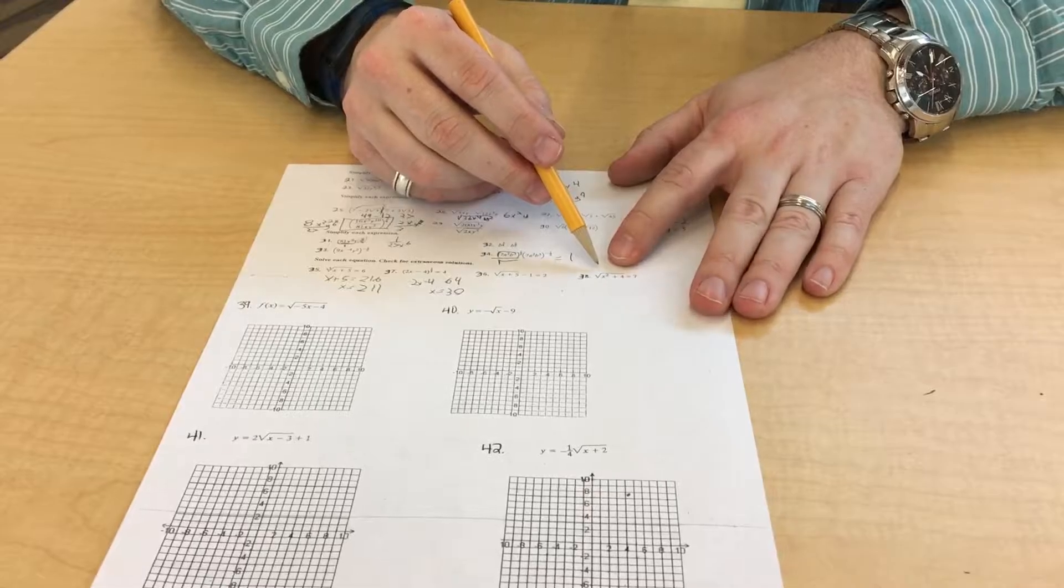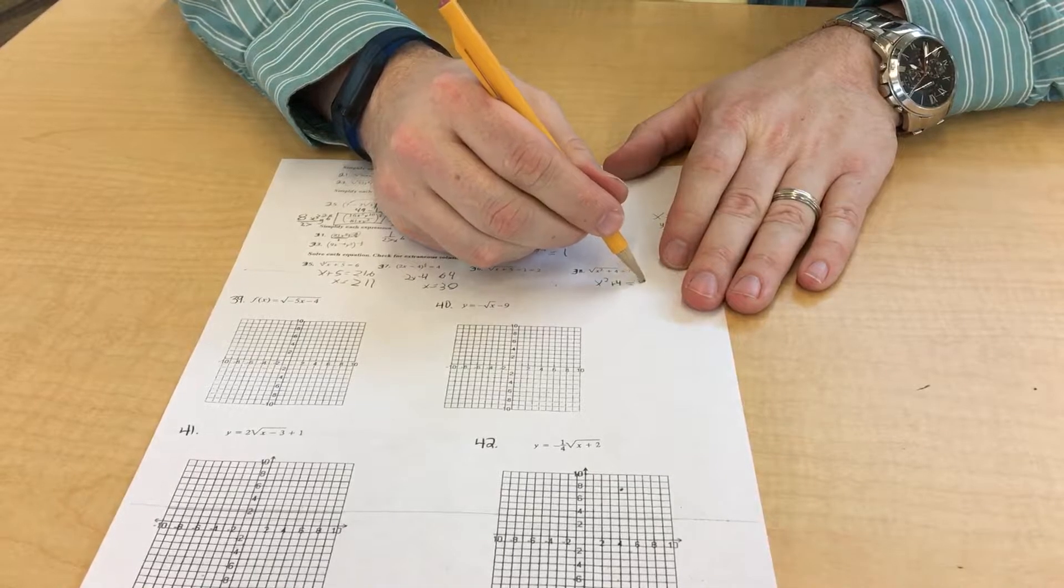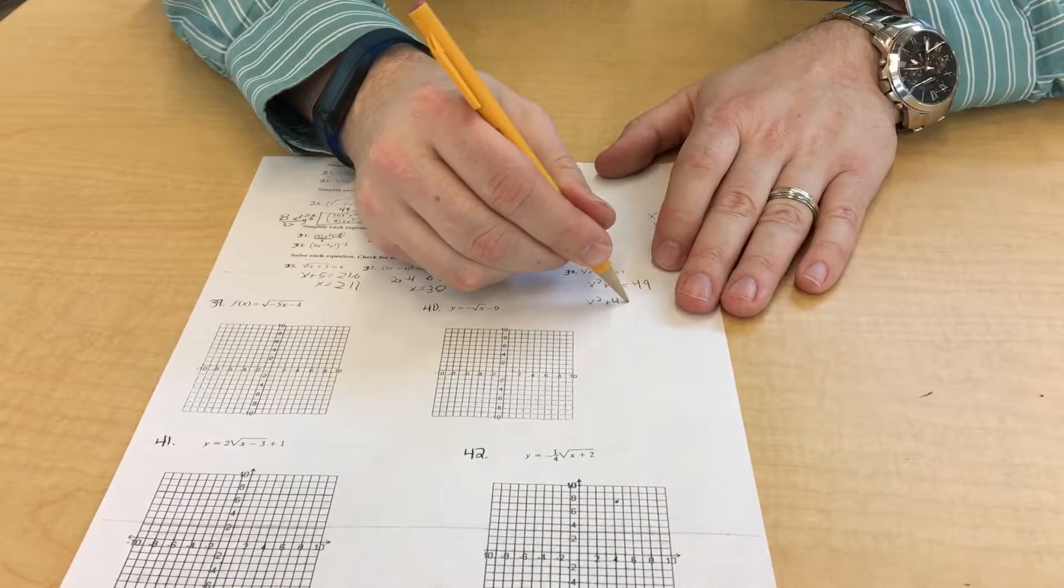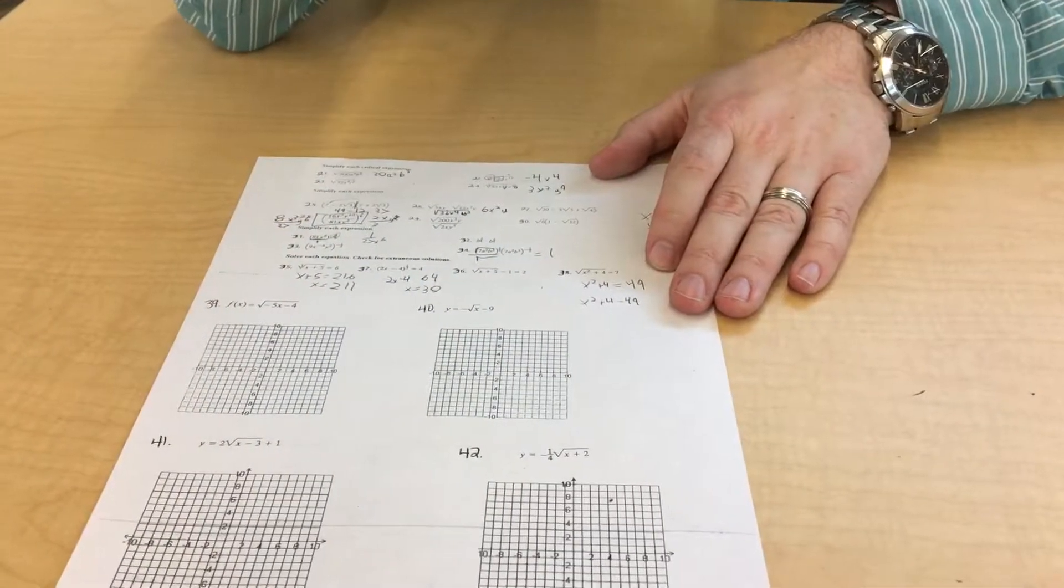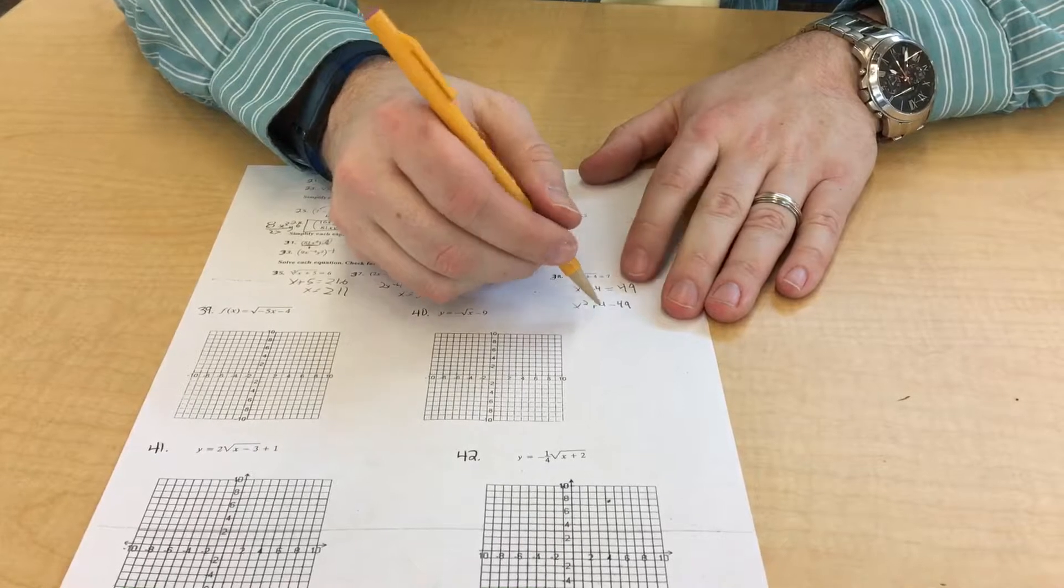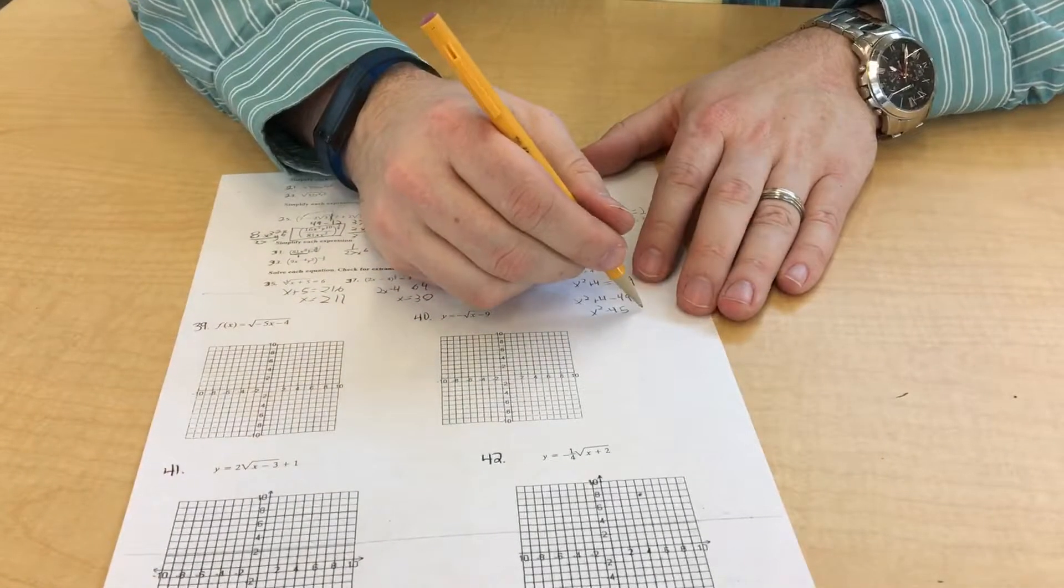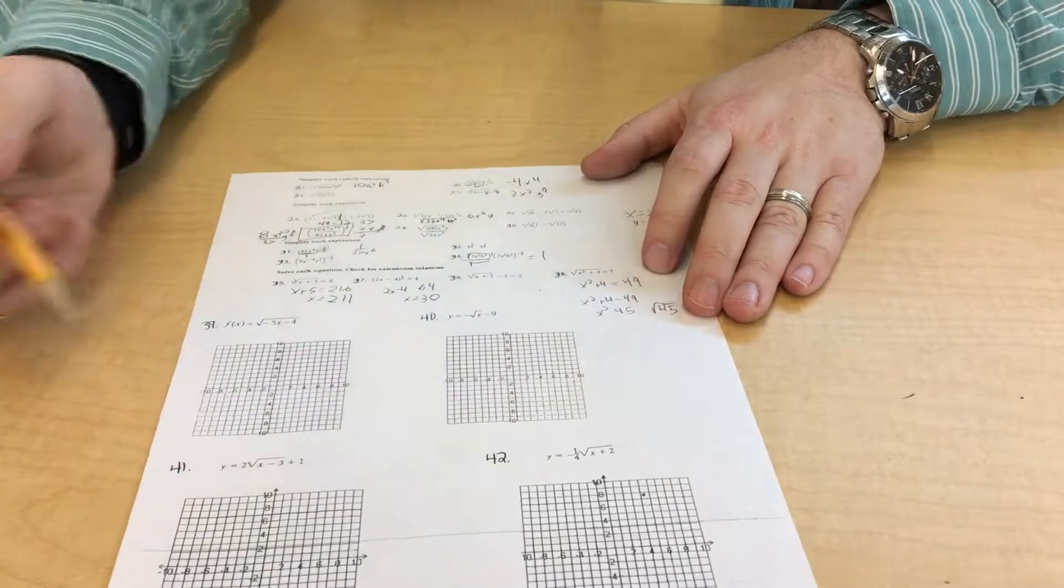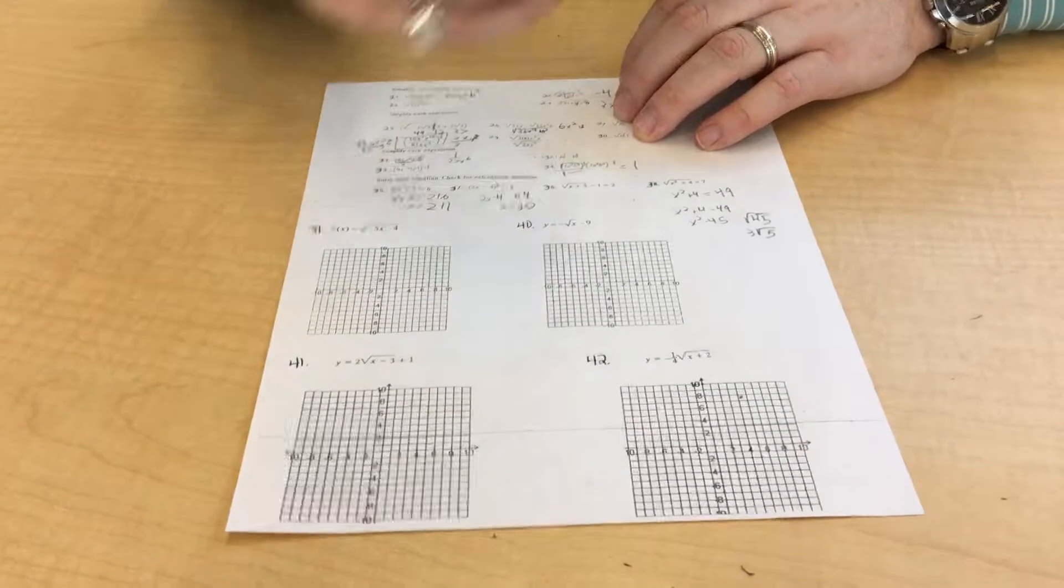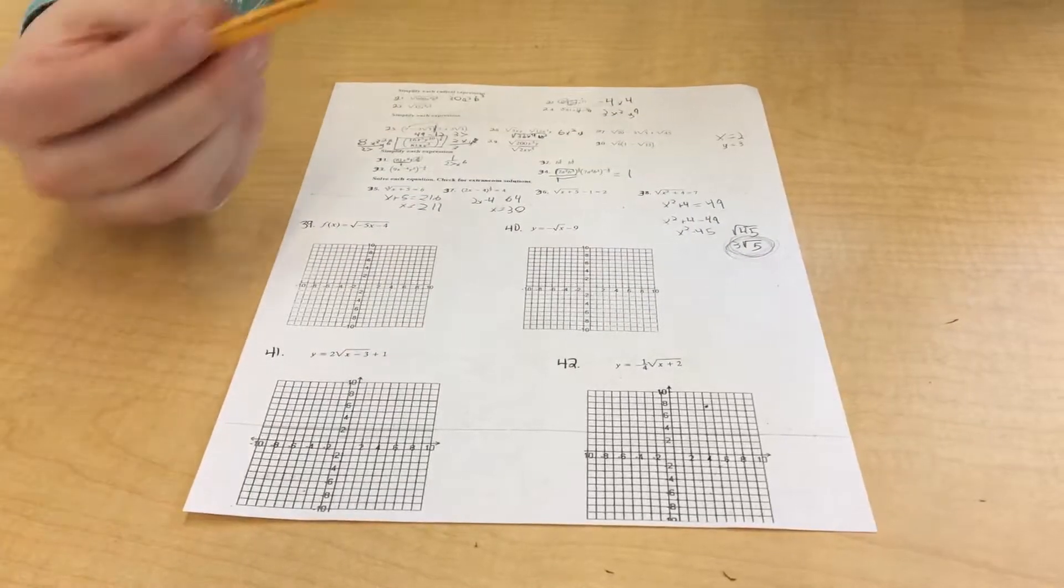On this one right here, this is going to be your difficult one on this part because that's x squared plus 4 is equal to 49. So this is going to be x squared plus 4 minus 49. And that one, you're going to have to run the quadratic equation. Oh, no. No, you won't. It would be x squared minus 45, which isn't factorable. So x is just going to be the square root of 45 for the answer on that one or 3 square root of 5.